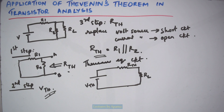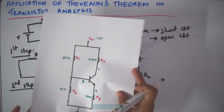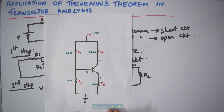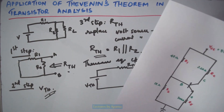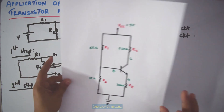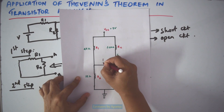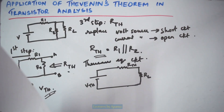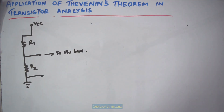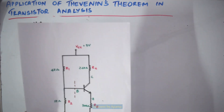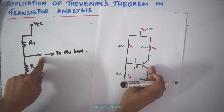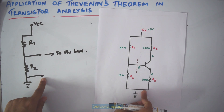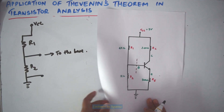Now let's come back to our voltage divider bias circuit. We have to apply Thevenin's theorem here. The first step is to remove the load resistance — I am cutting this part, separating the input side. So now the circuit looks like this: the input side going to the base of the transistor, and the other terminal connected to ground. So these are the two terminals.